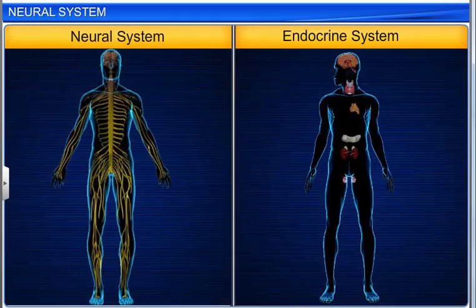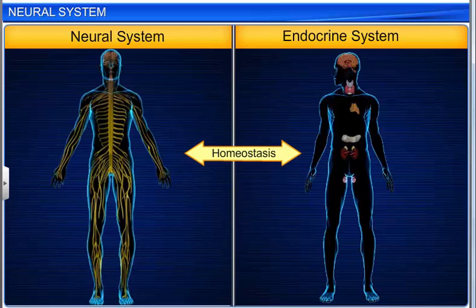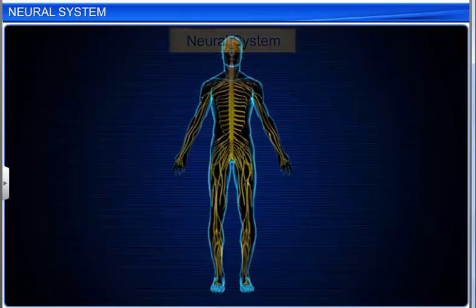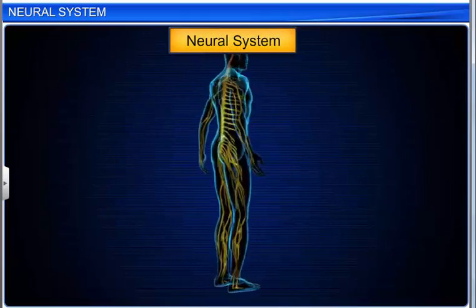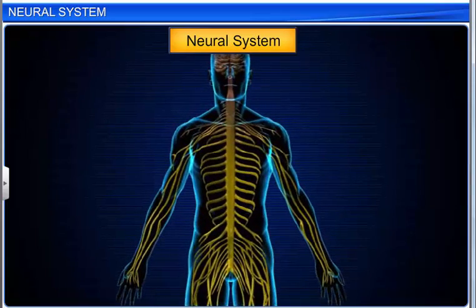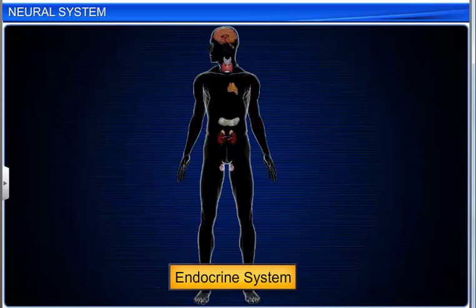The two systems in our body that maintain homeostasis are the neural system and the endocrine system. The neural system provides a network of point-to-point connections for quick coordination of nerve impulses. The endocrine system provides chemical integration through hormones. Sometimes it acts very quickly, while at other times it acts with a lag.